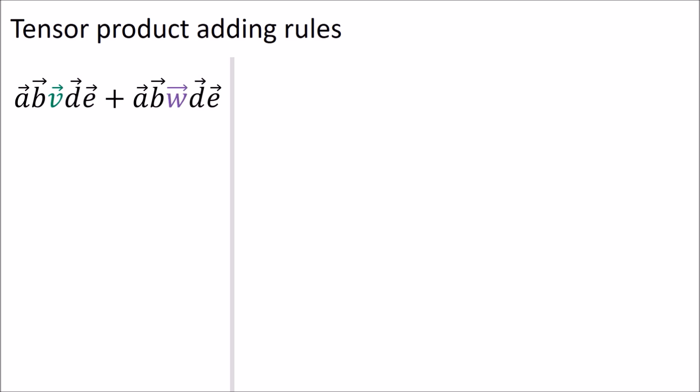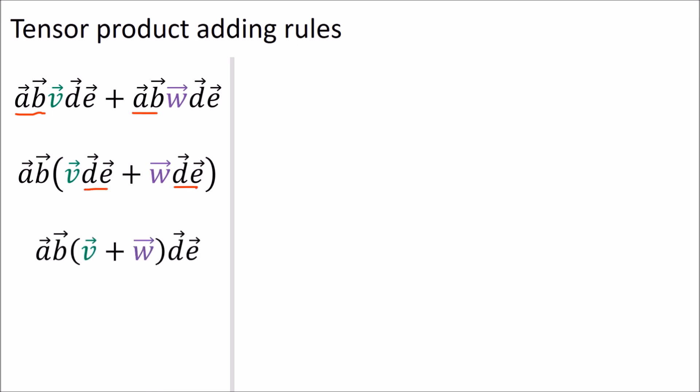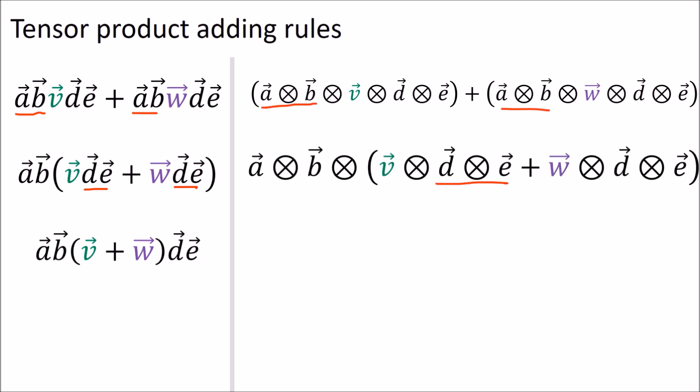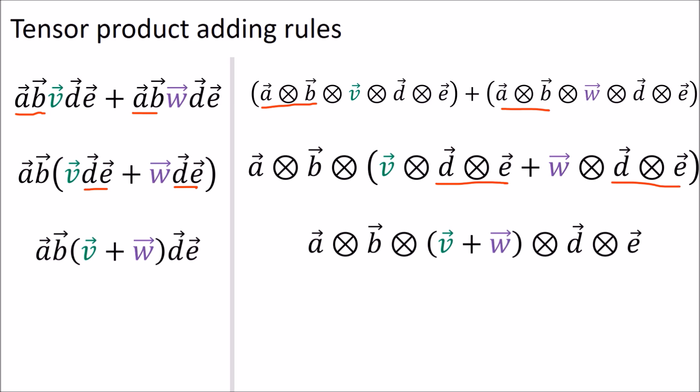The adding rules say that when we have a sum of tensor products where both terms have something in common on the left, we can factor it out — for example factor out a and b. And whenever both terms have something in common on the right, we can factor that out as well — for example factor out d and e. In circle-times notation we can factor out a⊗b here and d⊗e there, and it's the same thing written a little differently.